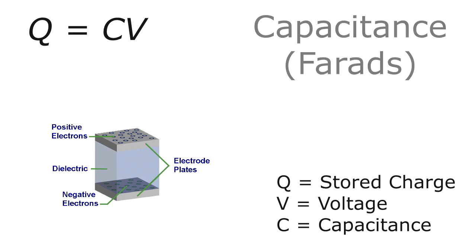And the constant of proportionality is called the capacitance, which is measured in farads. And capacitance equals Q over V or charge divided by voltage.